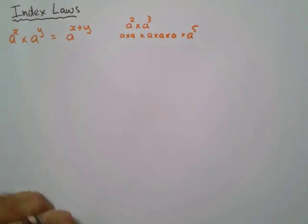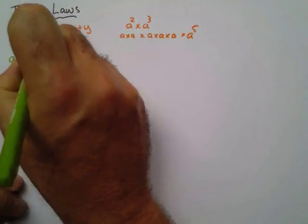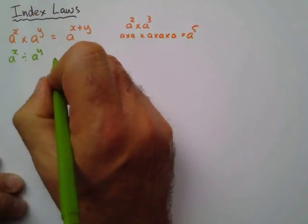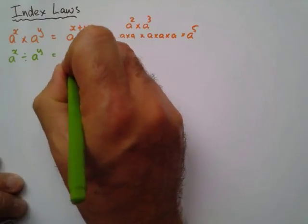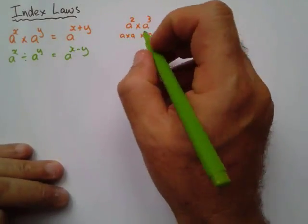My second law is a to the power x, divide by a to the power y, equals a to the power x minus y. And where does it come from?